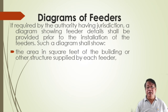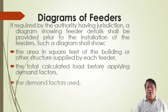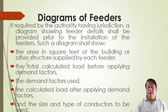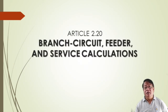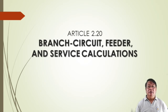Considerations include the area in square feet of the building supplied by the feeder. You should draw and show the diagram. The total calculated load before applying the demand factor, with the demand factor used, the calculated load after applying demand factors, and the size and type of conductors to be used. Feeders supplying 15 and 20 ampere receptacle branch circuits shall be permitted to be protected by a ground fault circuit interrupter or GFCI.